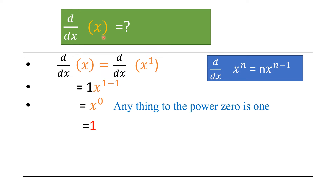What is the derivative of x? We rewrite d by dx of x as d by dx of x power 1, since if there is no written power, the power is 1. Applying the power rule: 1 comes to the beginning, x stays as is, and the new power is 1 minus 1 equals 0. Since anything to the power 0 is 1, the answer is 1. So d by dx of x equals 1.